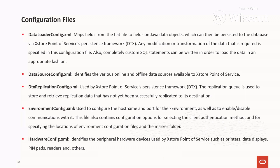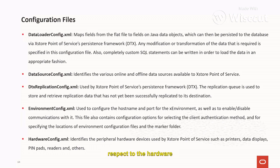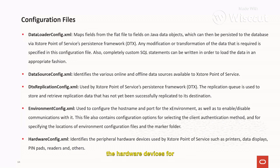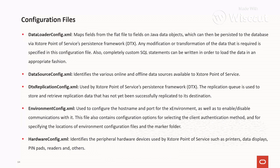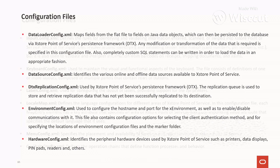The hardware_config.xml file identifies the peripheral hardware devices used by the Access Store Point of Service, such as printers, data displays, pinpads, readers, and others. If you need to configure hardware devices for a particular register, you configure those details in this file.